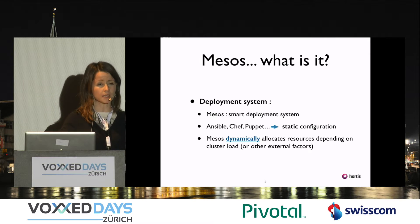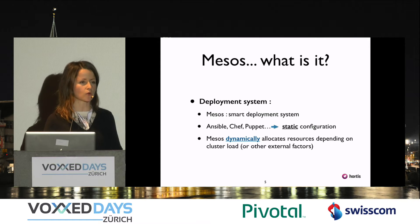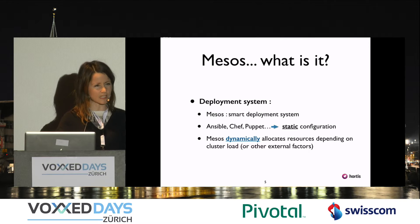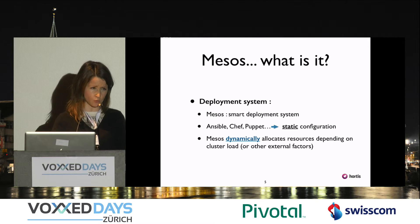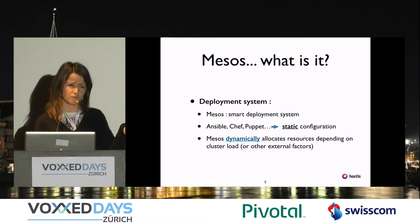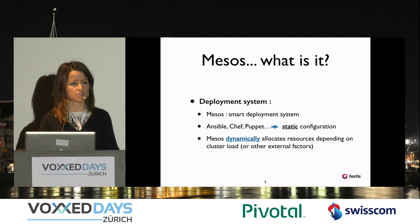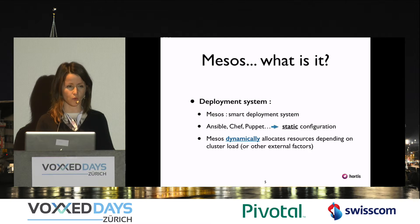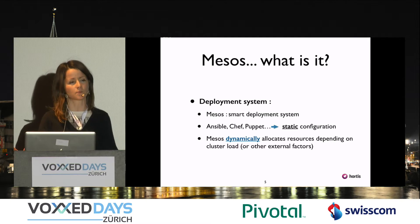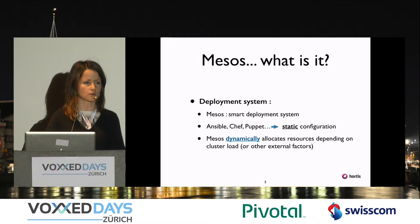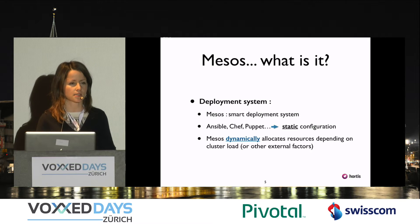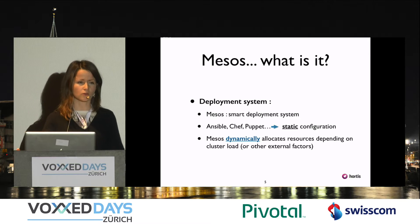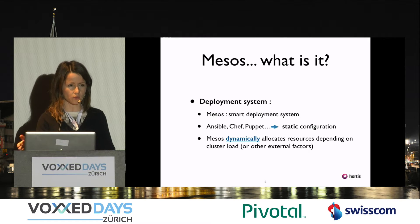For example, if we want to build a Mesos cluster from scratch, it would be useful to use Ansible, Chef, or Puppet — we'd say which IPs and machines should be the Mesos masters and which should be the slaves. On the other hand, Mesos provides a much more dynamic approach to deployment. It takes into account external factors such as the cluster load, and depending on this, it will deploy your application on one node or another.